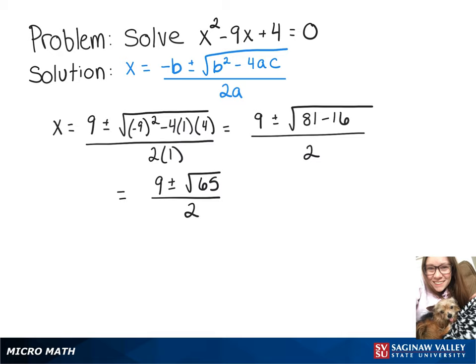So our two possible answers here would be x equals 9 plus the square root of 65 over 2 or x equals 9 minus the square root of 65 over 2.